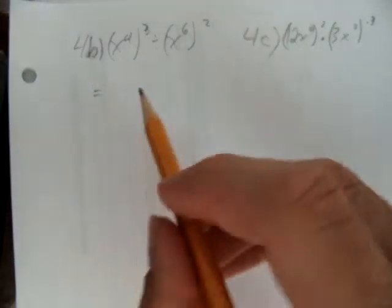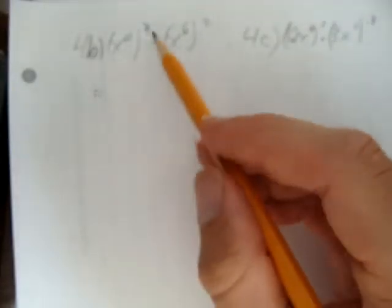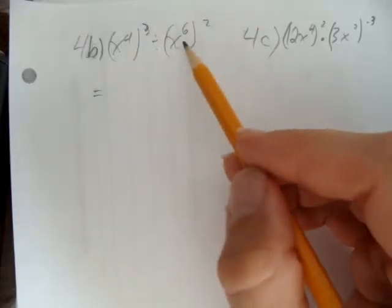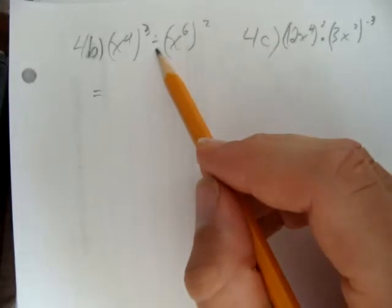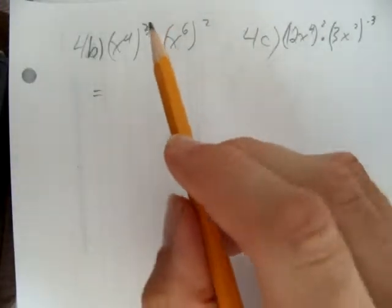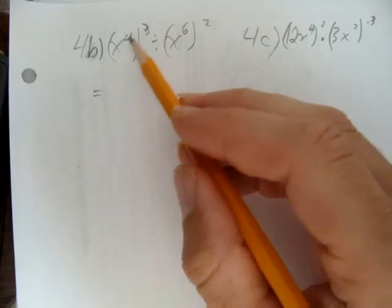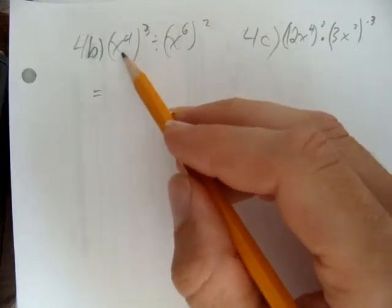Alright, let's try these questions with exponents. I've got x to the power of 4 all to the power of 3 divided by x to the power of 6 all to the power of 2. I can't do this divide yet because BEDMAS tells me I should do not the brackets because there's nothing to do inside the brackets, it's the exponents I need to do.